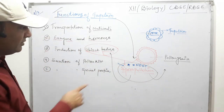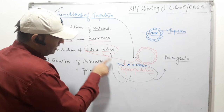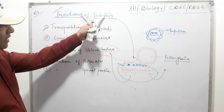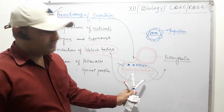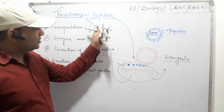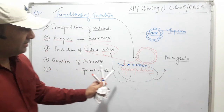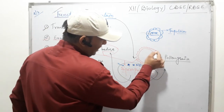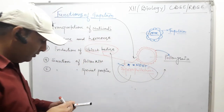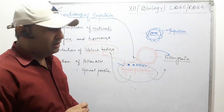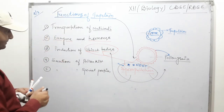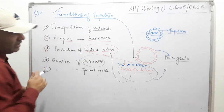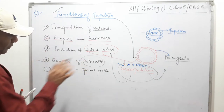To summarize the functions of tapetum: first is transportation of nutrients to the MMC from the middle layer. Second is secretion of enzymes and hormones for development of MMC. Third is production of Ubisch bodies which produce sporopollenin. Fourth is secretion of pollen kit for attachment to the pollen grain.